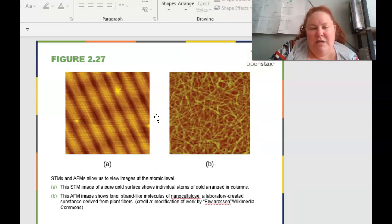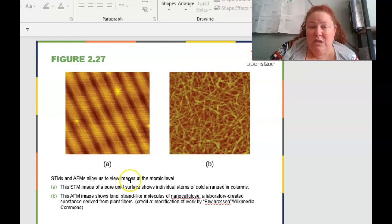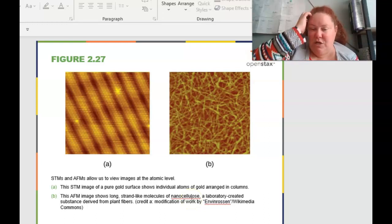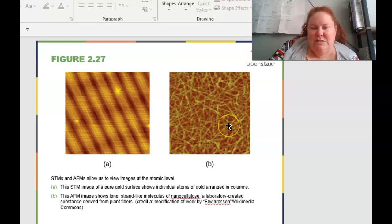The scanning transmission microscopy shows how close you can get at an atomic level. So again, scanning electron microscopy is going to be using a fine metal to coat. So this one uses gold, like pure gold. So it's again, very expensive to do these samples. I mean, it's microscopic. So of course it's going to be very small, but still you need it to be able to get that great image. So this shows individual atoms of the gold arranged in different columns where this one shows long strand-like molecules of nanocellulose, nano meaning small cellulose is a fiber. A structured thing. And this is a laboratory created substance that's derived from plant fibers.